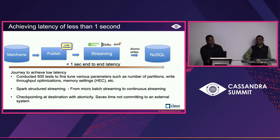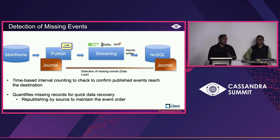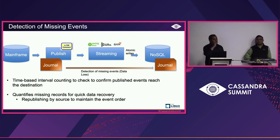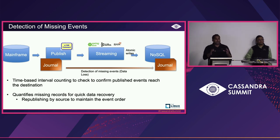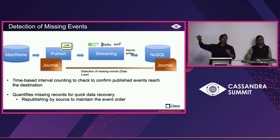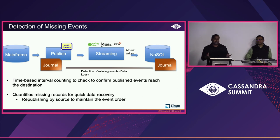For data loss — think of it like shipping with UPS: you get a tracking number to confirm your package arrived. It's the same concept here. When mainframe publishes any event, it tracks it using a journal table — just a tracking number, not the entire payload, so it doesn't cost much. That tracking number passes along through the streaming pipe and is also stored in Cassandra. It's short-lived — we kept it for three days — because you'll know if events are missing within 30 minutes.